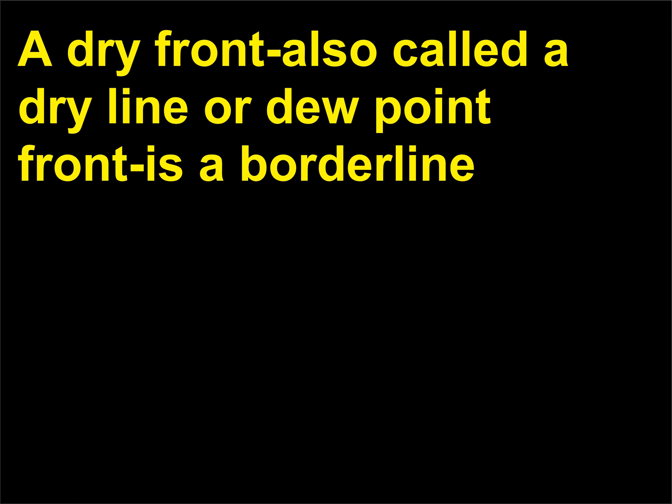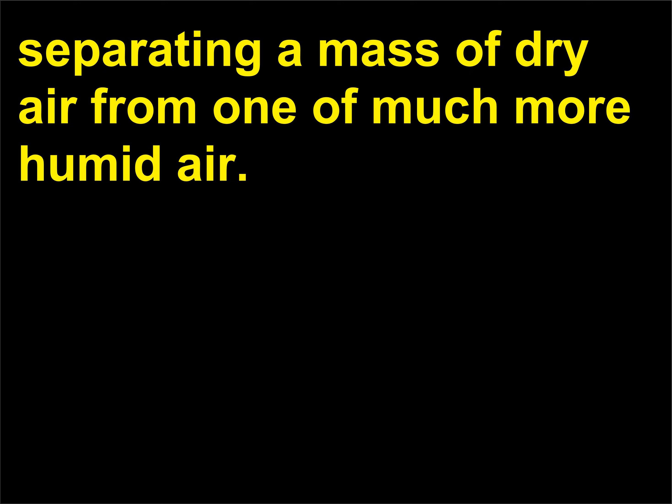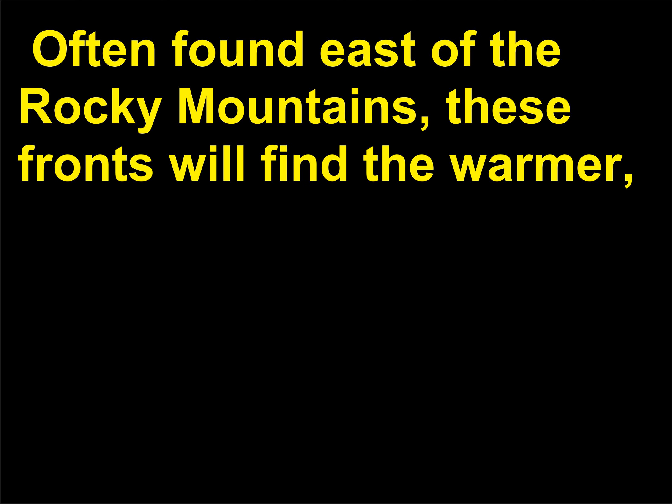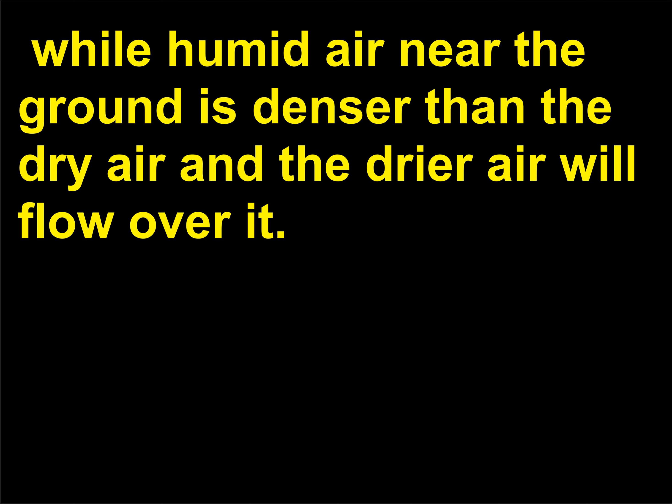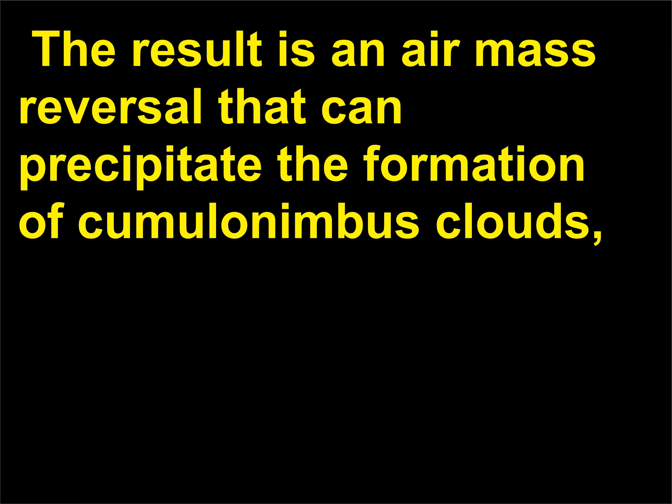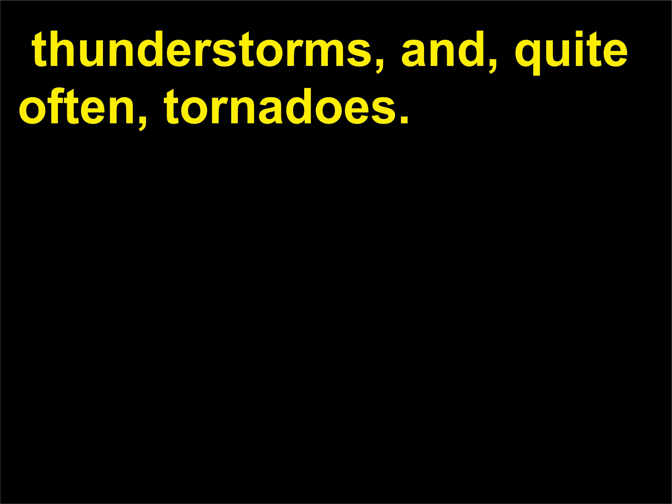What is a dry front? A dry front, also called a dry line or dew point front, is a borderline separating a mass of dry air from one of much more humid air. Often found east of the Rocky Mountains, these fronts will find the warmer, drier air lifting the cooler, more humid air ahead of it in the higher altitudes, while humid air near the ground is denser than the dry air and the drier air will flow over it. The result is an air mass reversal that can precipitate the formation of cumulonimbus clouds, thunderstorms, and quite often tornadoes.